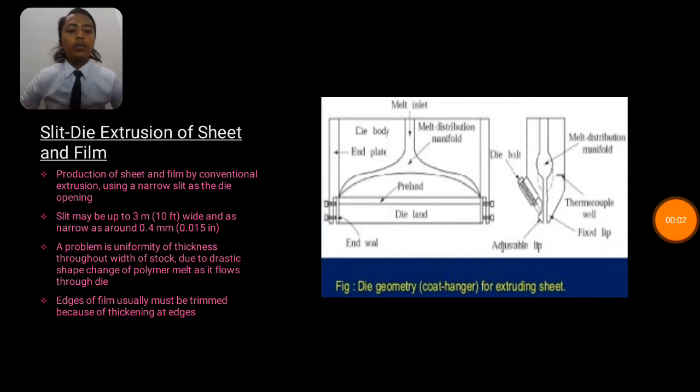The diagram beside shows the die geometry of coat hanger for extruding sheets.